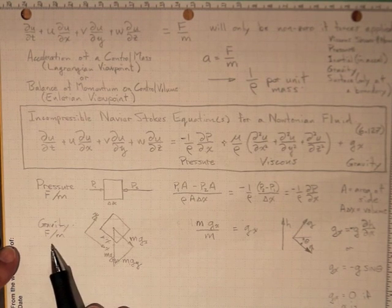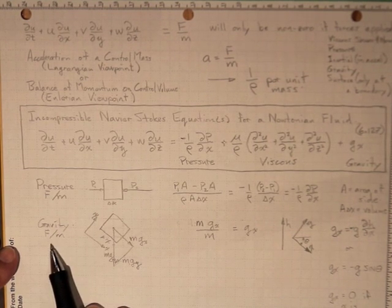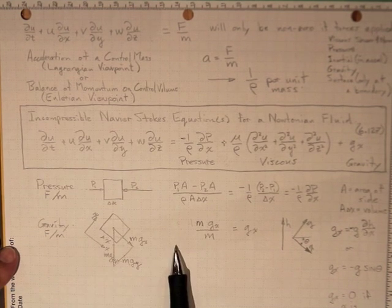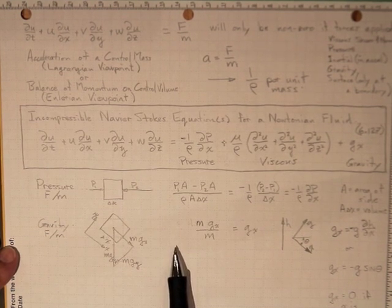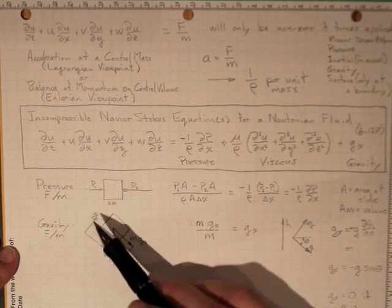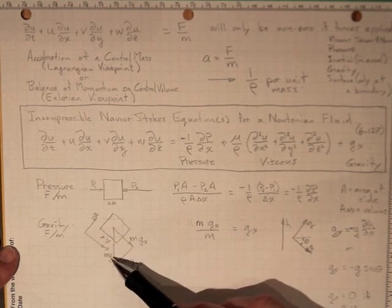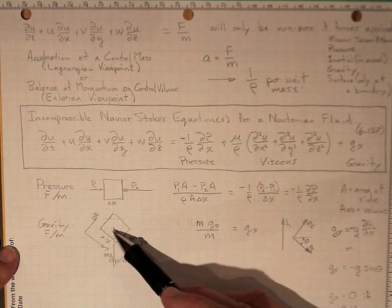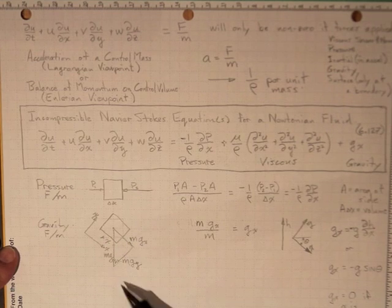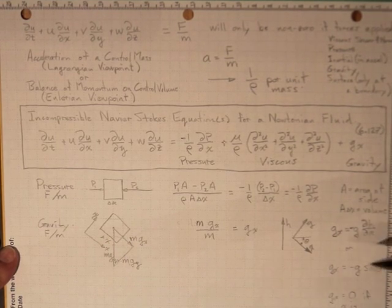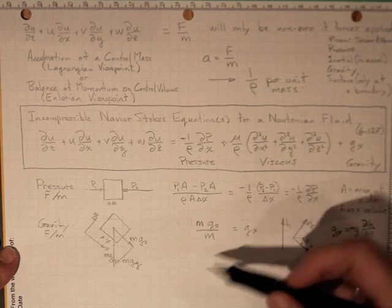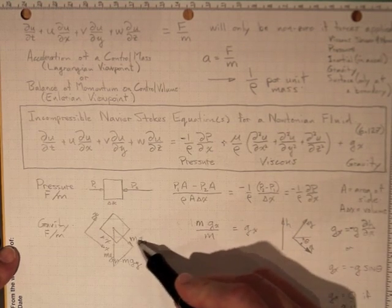Gravity force per unit mass: if the x-direction was horizontal, there would be no gravity force per unit mass. But if the x-axis is oriented like this, then there'll be a component of gravity acting in the x-direction.